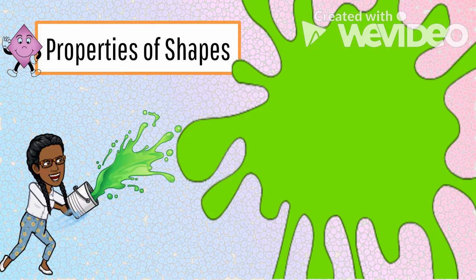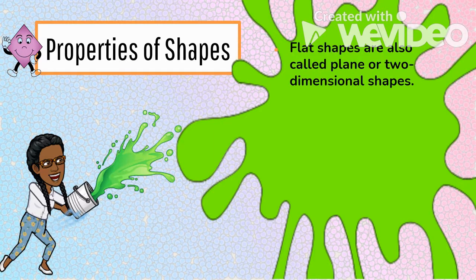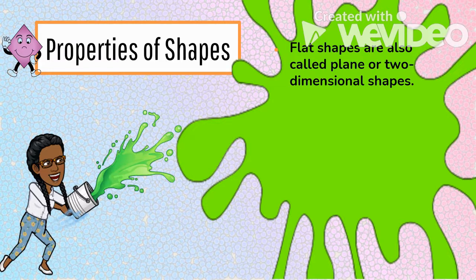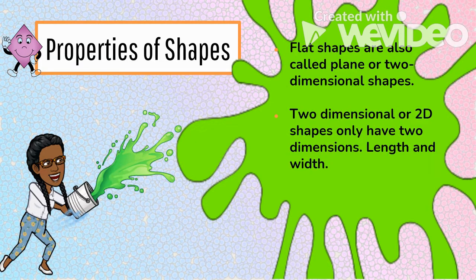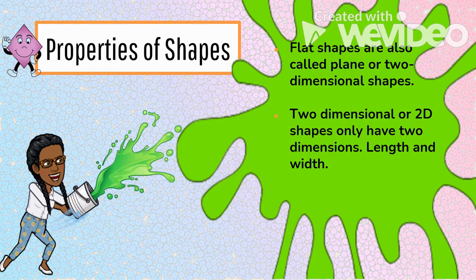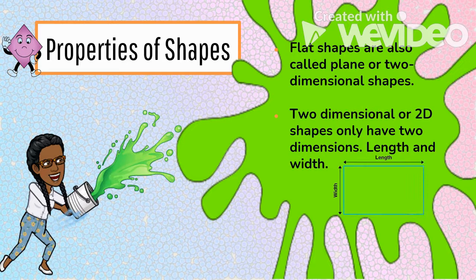The properties of shape give us information about that shape. Flat shapes are also called plain or two-dimensional shapes. Two-dimensional or 2D shapes have two dimensions: length and width.